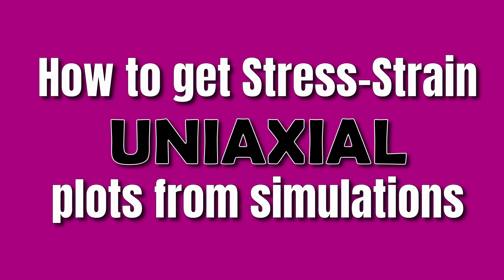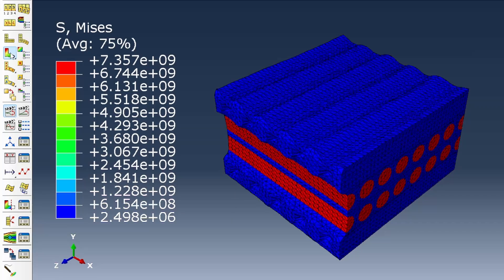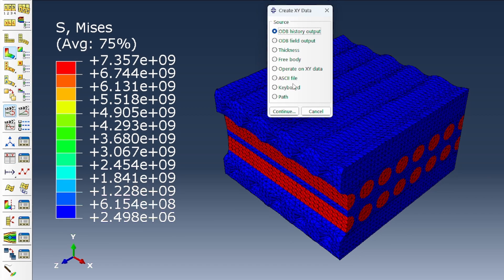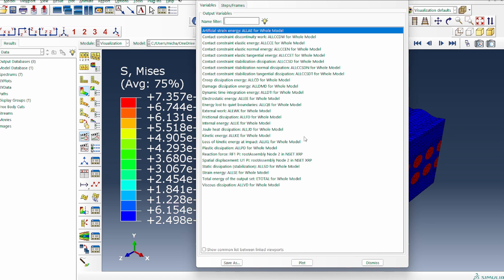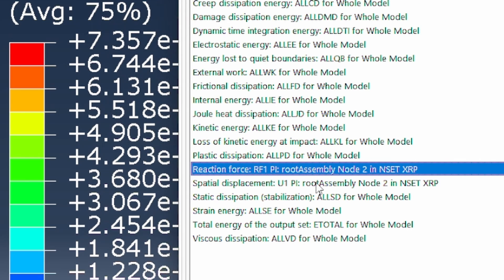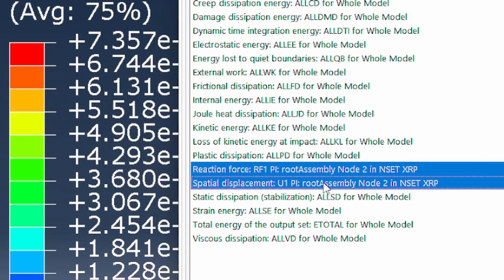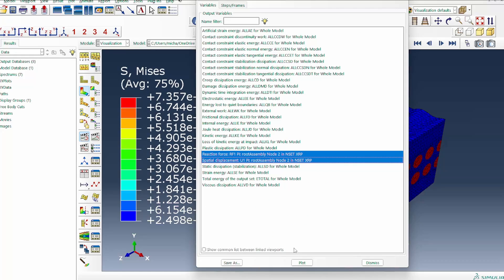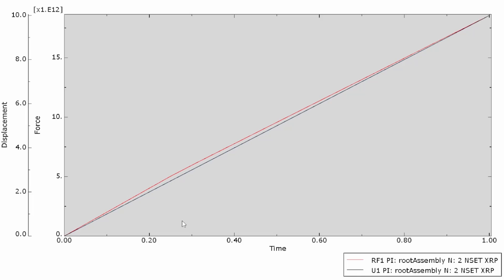For us to get the stress-strain data, first thing we're going to do is go to the history output. We've already asked it to extract certain history output for us. So for this uniaxial X-axis direction, there's a reaction force in the one direction and displacement in the one direction, which is the X-axis direction. So we're going to plot those two. This is the fiber direction that is dominated by the behavior of the fiber, so I would not expect any plastic deformation. It would potentially be a linear elastic deformation both in terms of stress history and displacement, and that's what we see here.